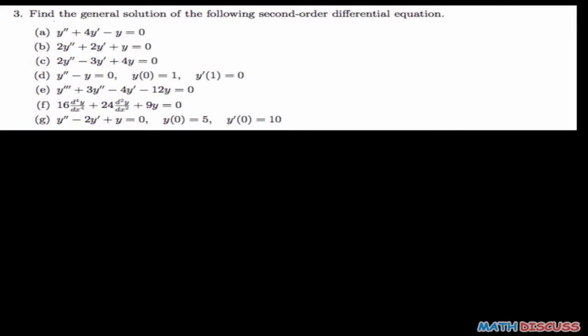We are back in question 3. We are going to find the general solutions of the following homogeneous differential equations. They are all homogeneous differential equations because the right-hand side in all of them is zero. So let's start by finding the first one. We want to find the solution of homogeneous differential equation A, which says y'' plus 4y' minus y equals zero. The first thing you want to do is form the auxiliary equation.